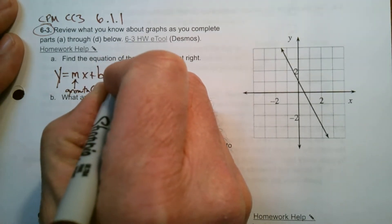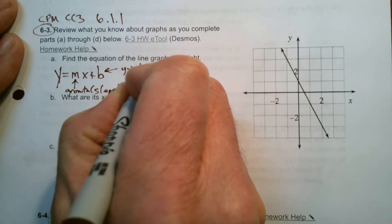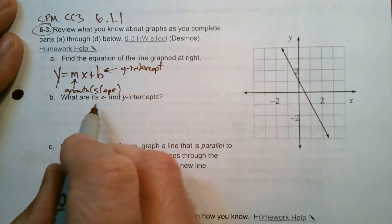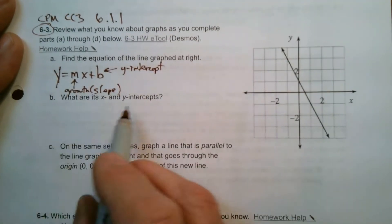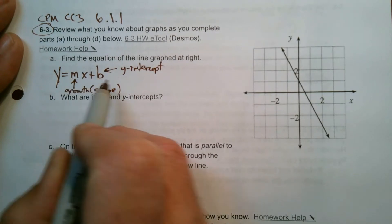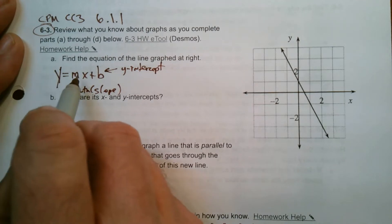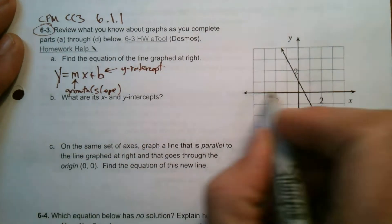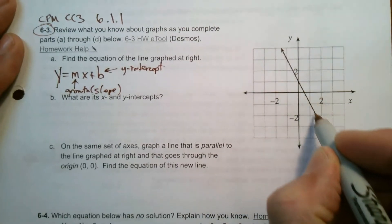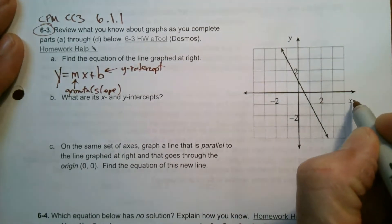And the b is always the y intercept or the initial value. So if I know my m, I know my b, I know my equation, because my equations most likely have that y and x in it, because we're dealing with all of these solutions represent an x and a y, right?